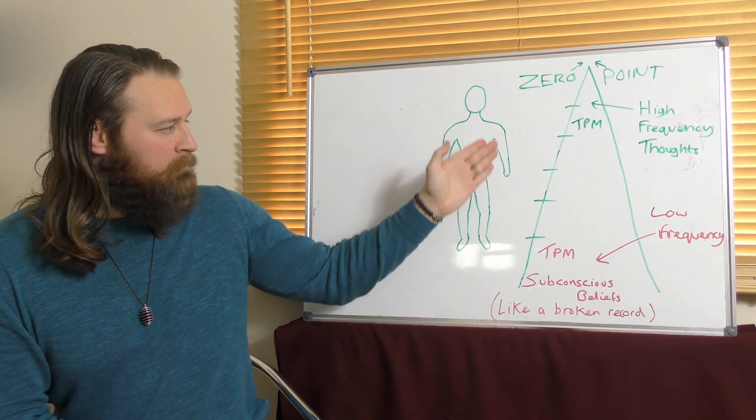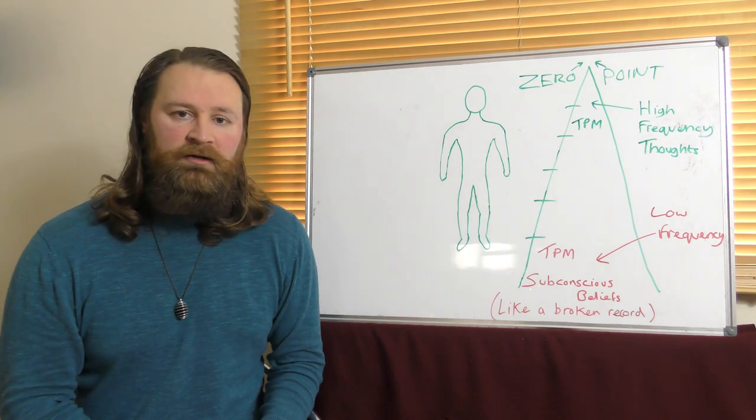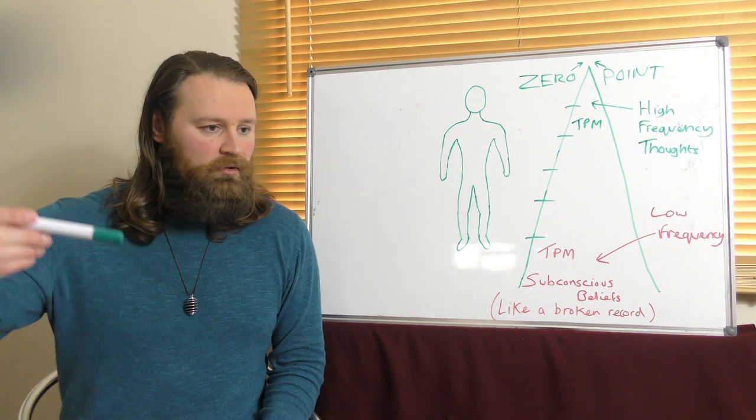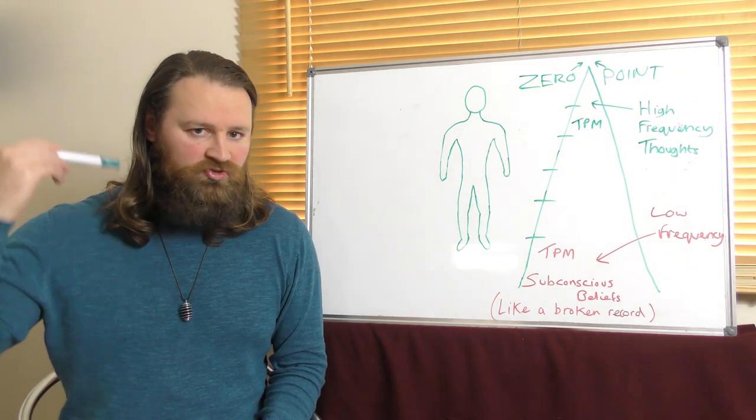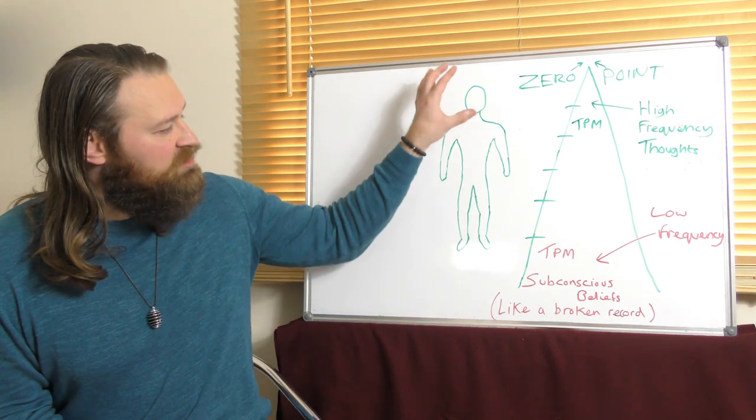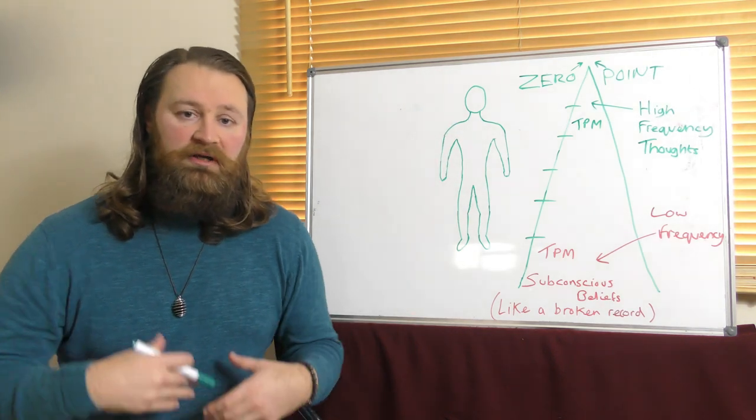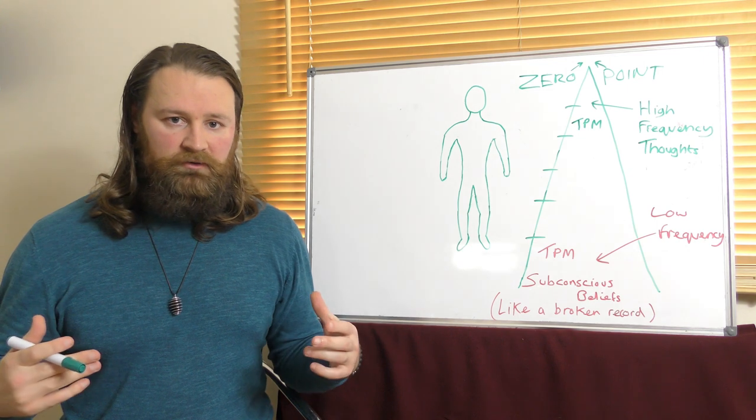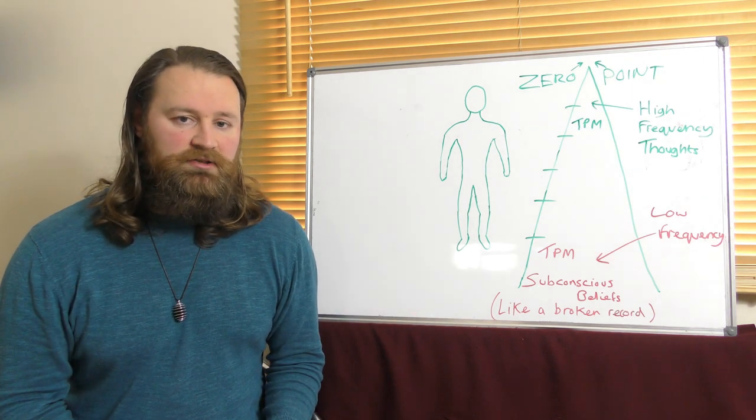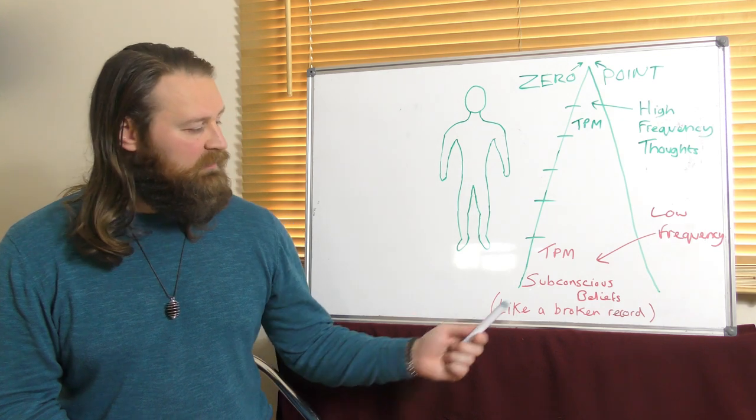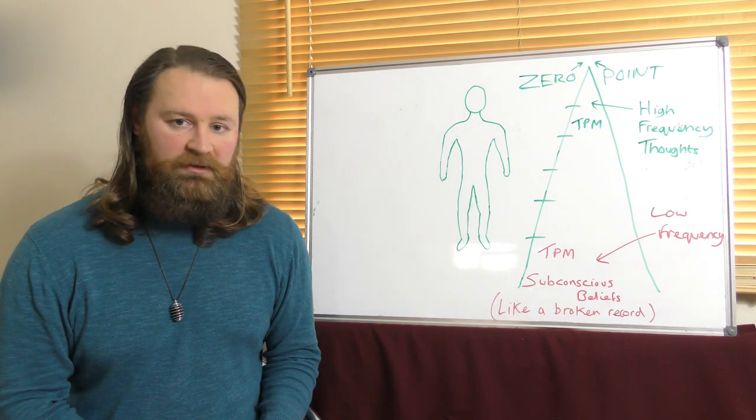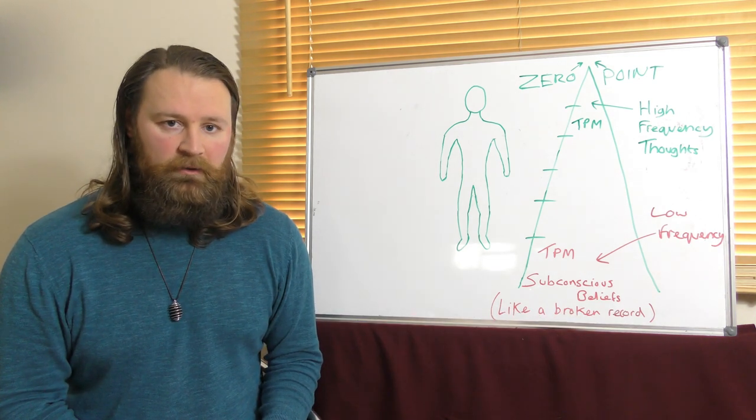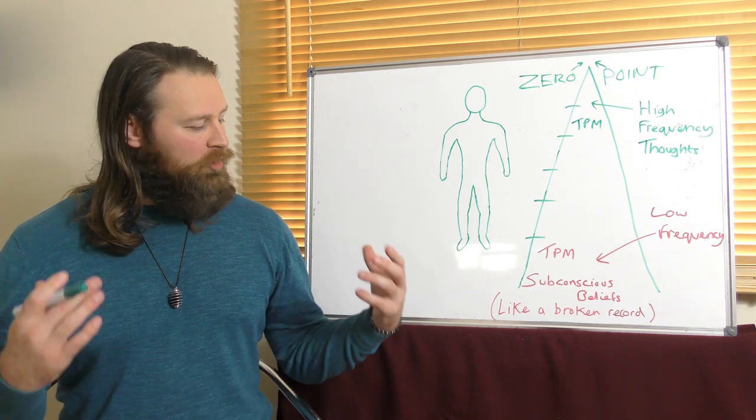The body then strays from the prime frequency because you've got all these subconscious beliefs going on in the body, because the mind is actually all over the body. It's not just in the head. They're finding that the memory, the mind, is everywhere. It's in every cell of your body. So when you are holding these low-frequency subconscious beliefs, it's actually changing the whole frequency of the body and even your energetic field. We know that we have an energetic field, the auric field. That even changes when we are taking on and holding all of these subconscious beliefs. And they're like a broken record that is playing constantly over and over again.